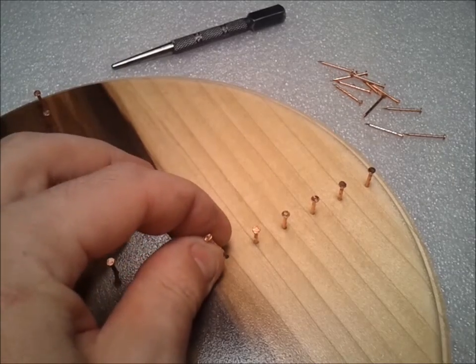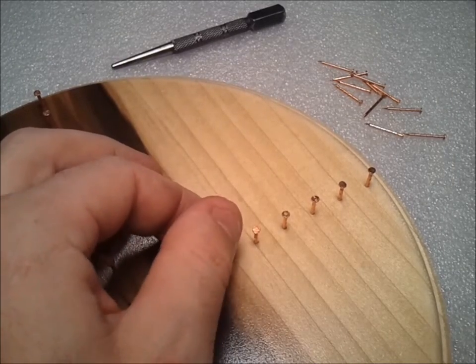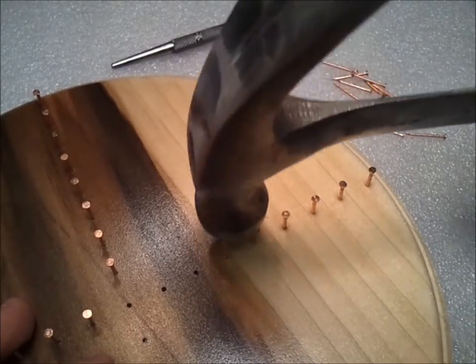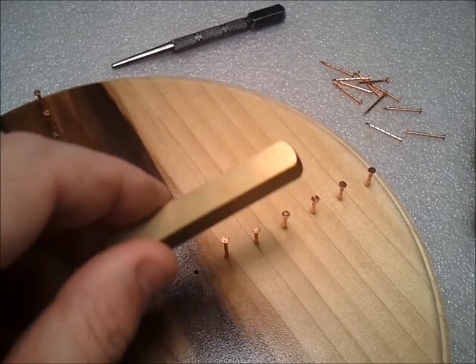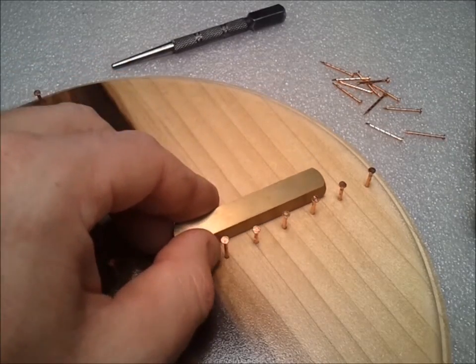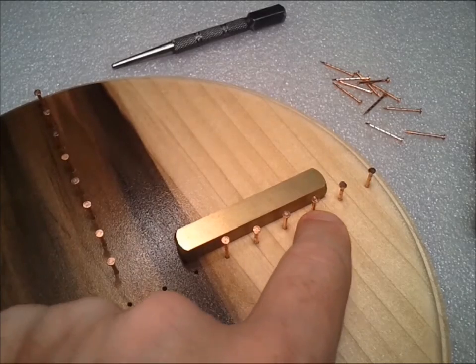Before I started to put the nails in, I gave it one final sanding with 600 grit. I'm using a three-eighths brass bar to make sure all the heights of my nails are uniform.